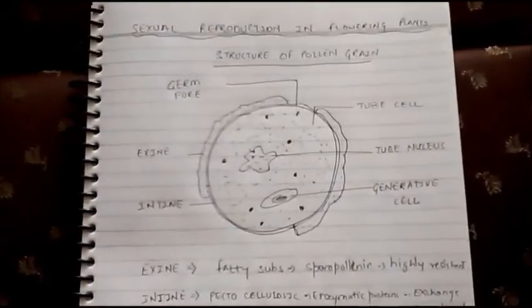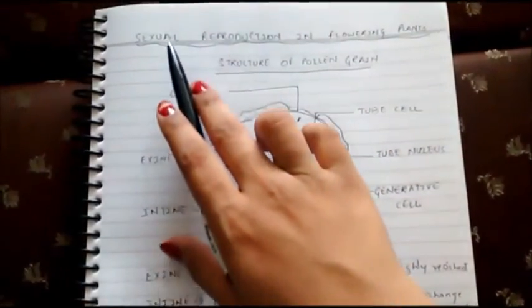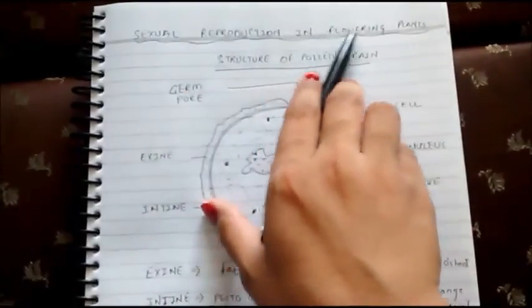Today we are going to study about the structure of pollen grains, which is a topic from sexual reproduction in flowering plants.